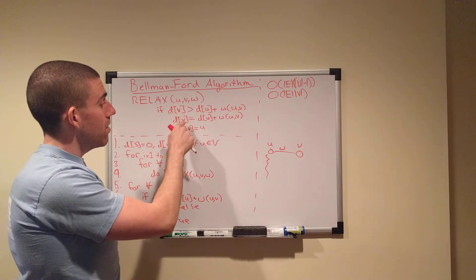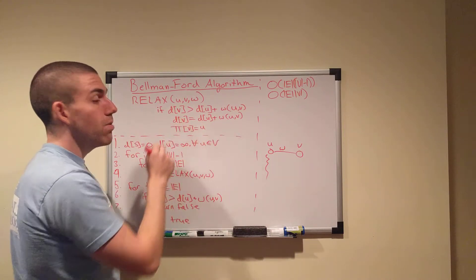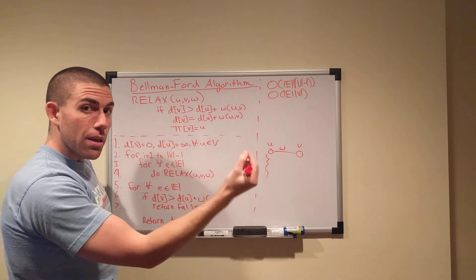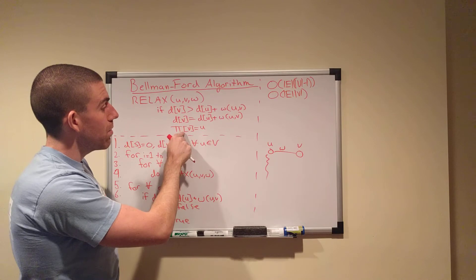In the event it is, you just set that distance to the new distance, and you set V's new previous in your previous array, so the preceding node to get to V, you set that to U.